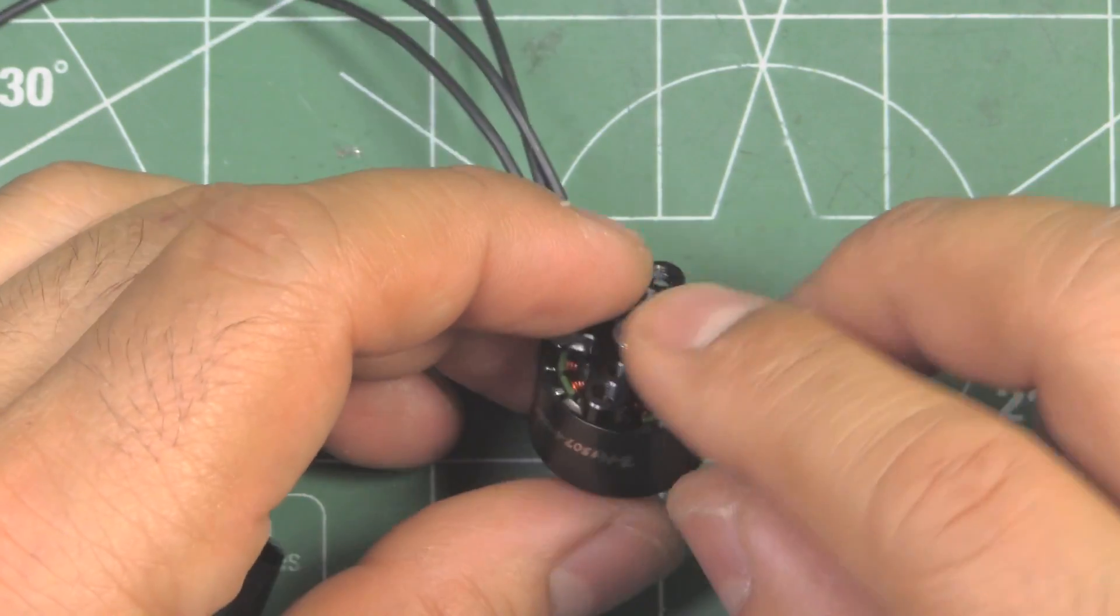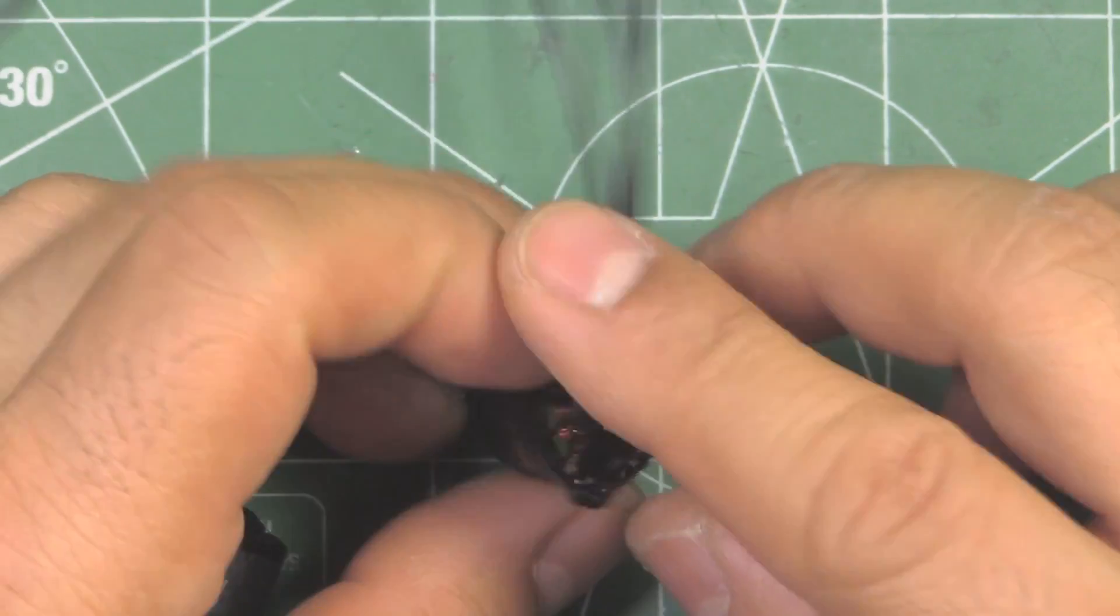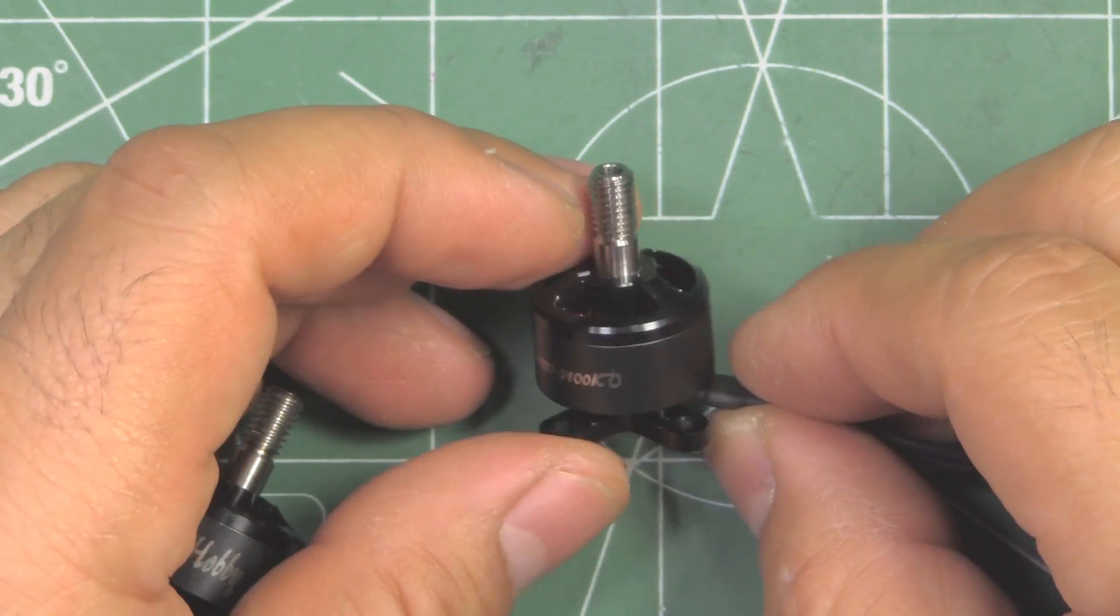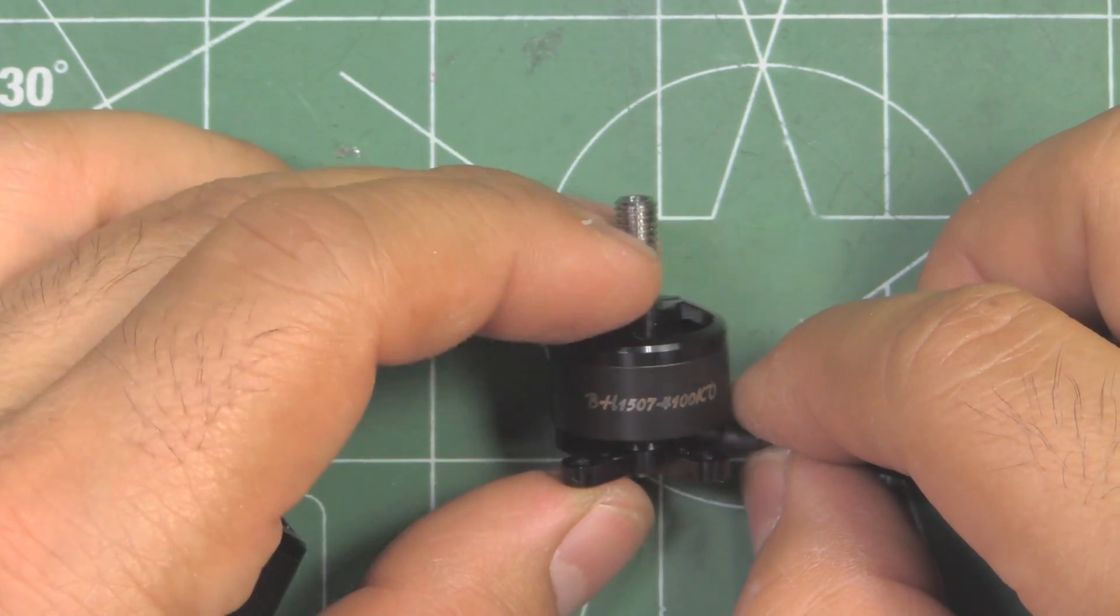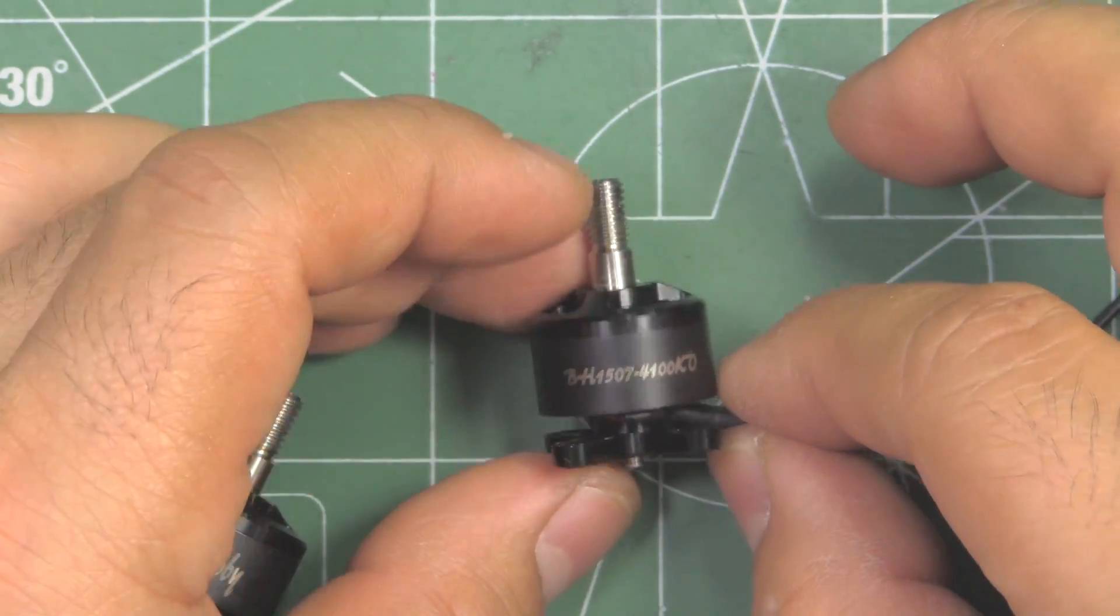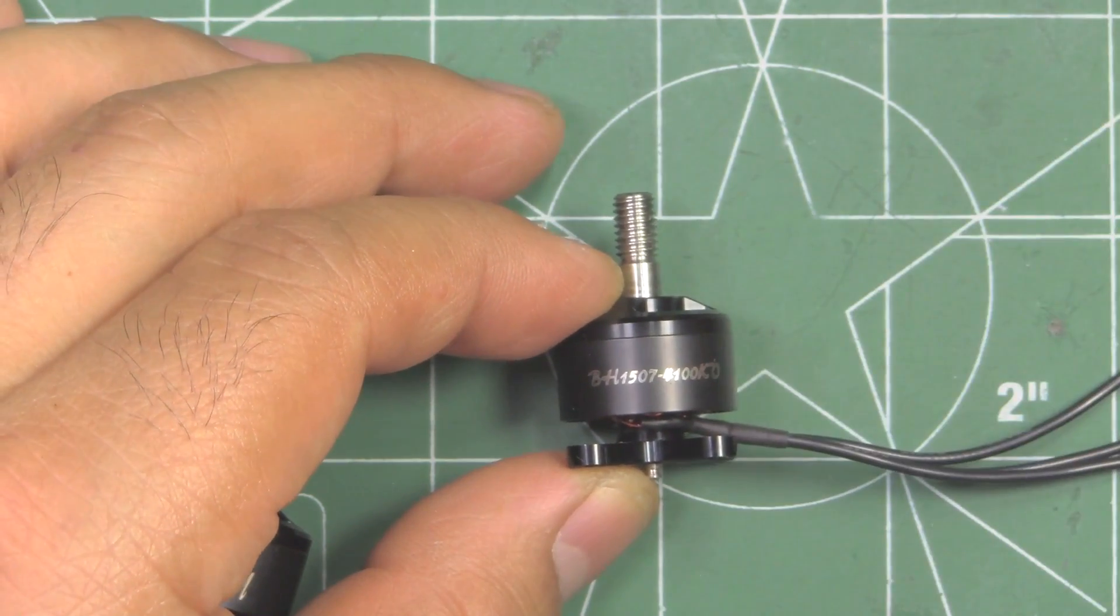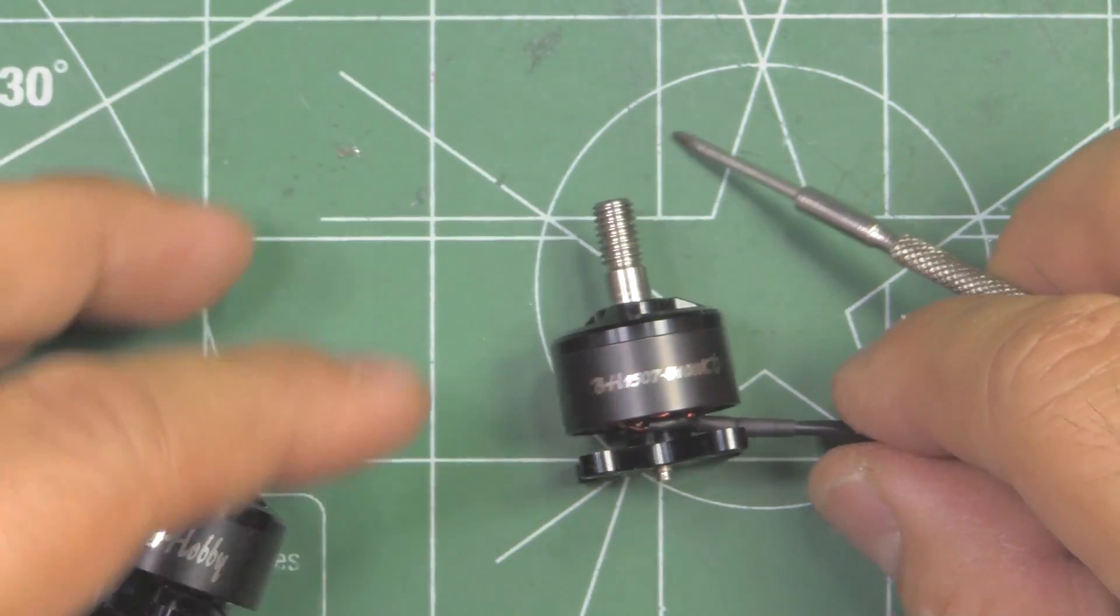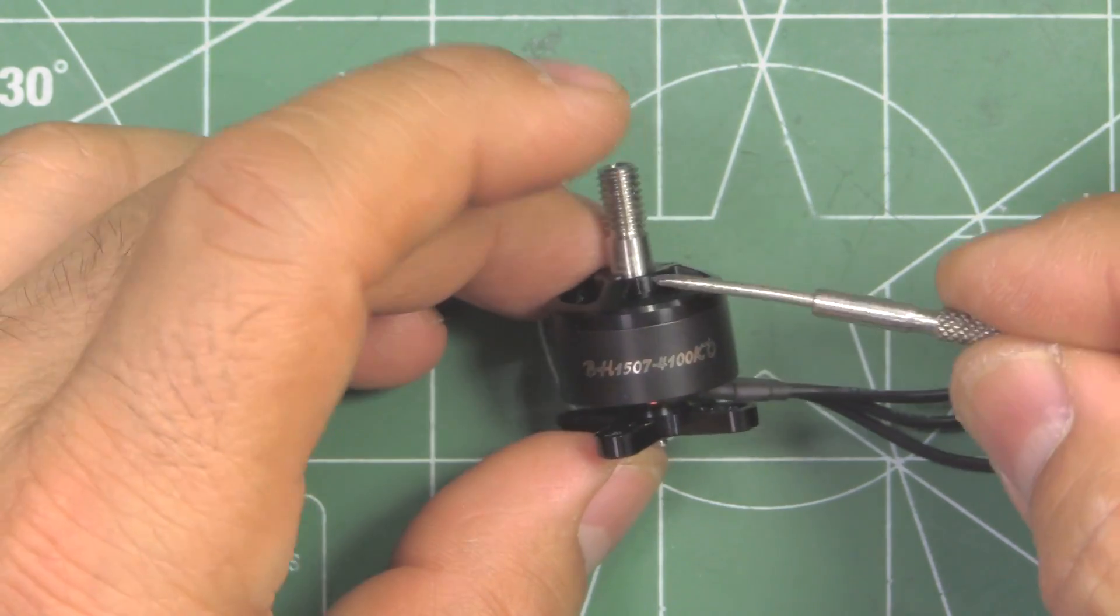But some of you guys that like to get the lightest possible, that's an option. Pretty interesting motor, step up from the 1407, the one that everyone knows, the powerhouse 1407 from Brother Hobby. I don't think they're replacing it, it's just another option that Brother Hobby is offering, because the 1407 is such a successful motor, and it does so well on three and four inch builds, so I don't think they're going to replace that any time soon.